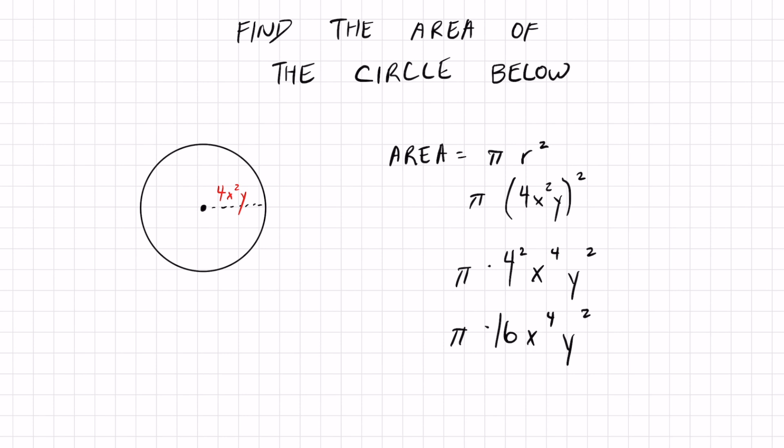4 squared is just 16 x to the fourth y squared. That pi is still there. And you can write it like this. 16 pi x to the fourth y squared.